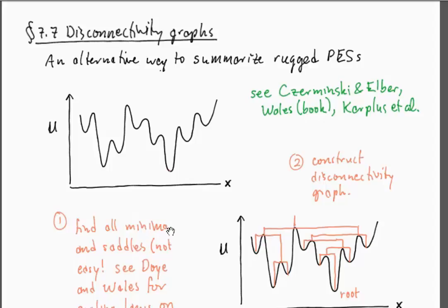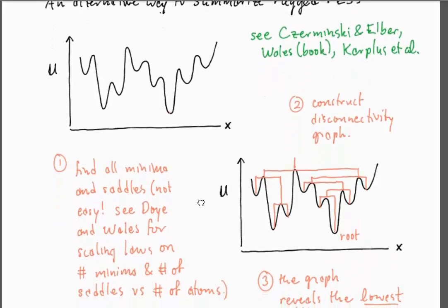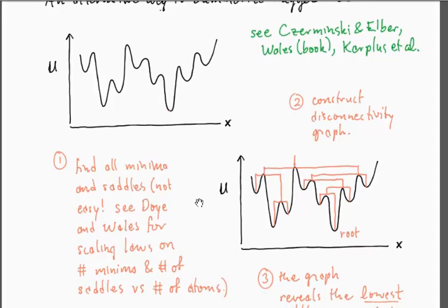They've developed some scaling laws to predict the number of minima and the number of saddles that you have as a function of the number of atoms for different types of systems. The fact that that's a scaling law tells you that this is a pretty terrifying number. You're often talking about systems that have tens of thousands of atoms scaling up to some higher power.